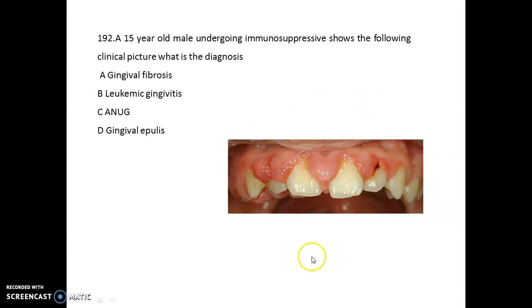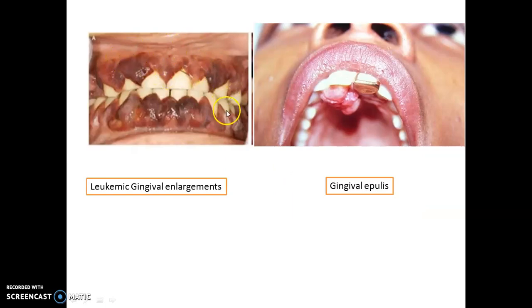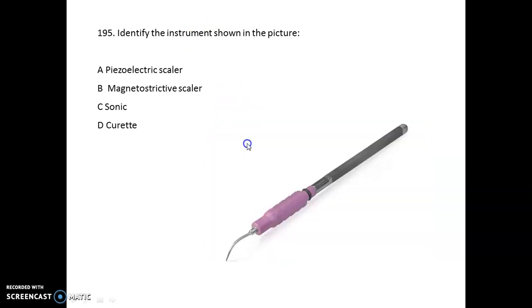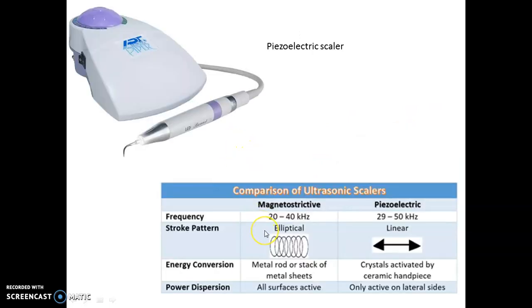A 15-year-old male undergoing immunosuppressive therapy — this clinical picture indicates gingival fibrosis. The classical picture for leukemic gingival enlargement and the classical picture of gingival epulis are shown. Identify the instrument in the picture — this is the Quad's perio retriever. The next instrument shown is the magnetostrictive scaler.